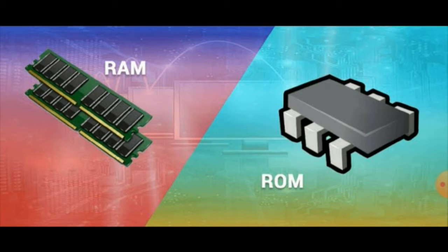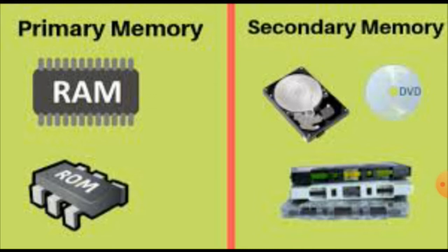What is ROM? Read Only Memory is a permanent memory which is used for future use, where you can save data permanently. What is primary memory and secondary memory? Primary memory can be called internal memory — RAM and ROM — and secondary memory can be called external memory.